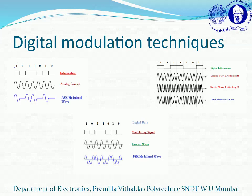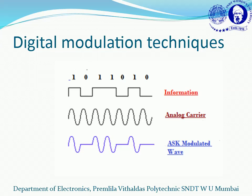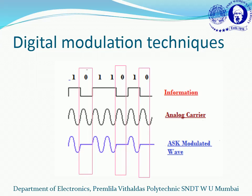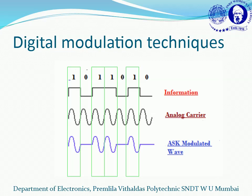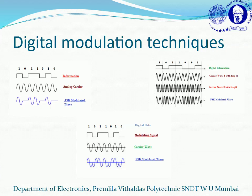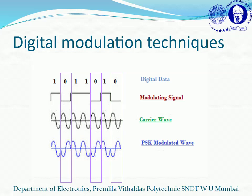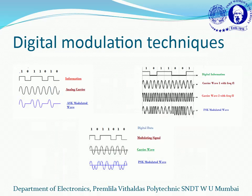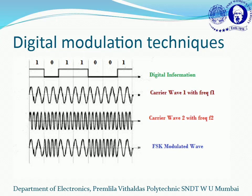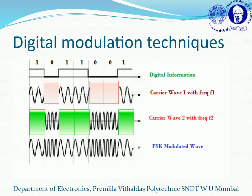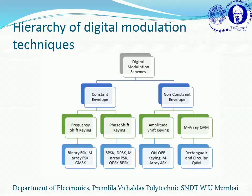Let us now move to the new section. In ASK modulation, for bit zero we represent it by one amplitude, and for bit one we use another amplitude. Similarly for PSK, we use two different phases for zero and one. For FSK, we use two carrier waves: for zero, one frequency is selected, and for one, the other frequency is selected.